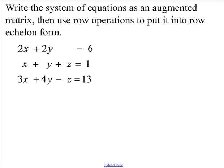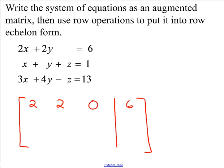Let's try one more — a more complicated system of three equations and three unknowns. Your first step is to write the system as an augmented matrix. You should have: the first row is 2, 2, 0 — you need a 0 to hold the place since there are no z terms in the first equation — and then 6. My second row is 1, 1, 1, 1. My third row is 3, 4, negative 1, 13.